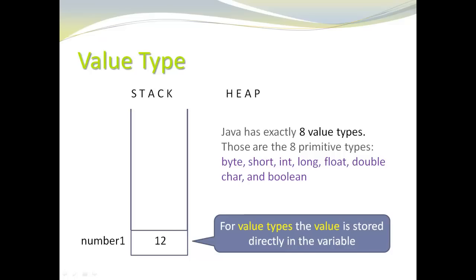The 8 primitive types are: byte, short, int, long, float, double, char, and boolean.